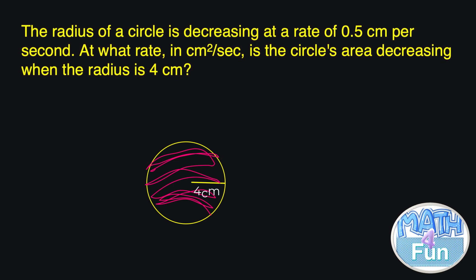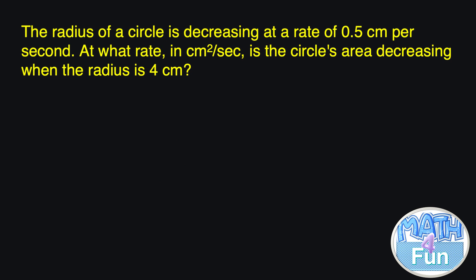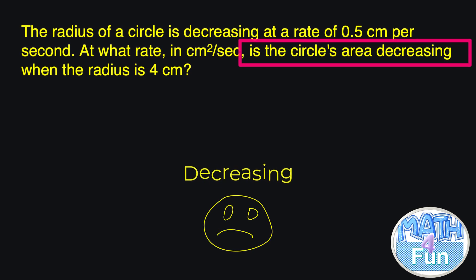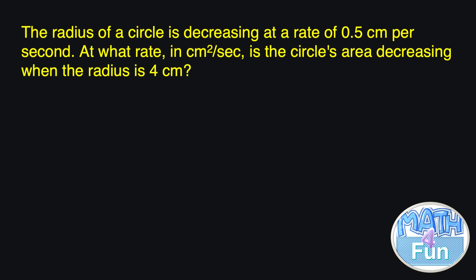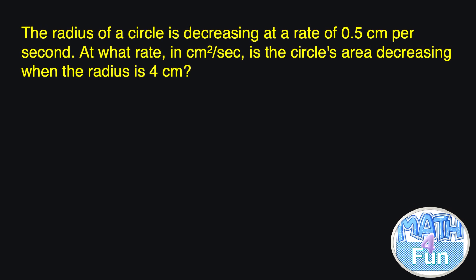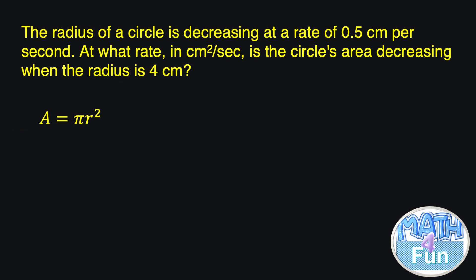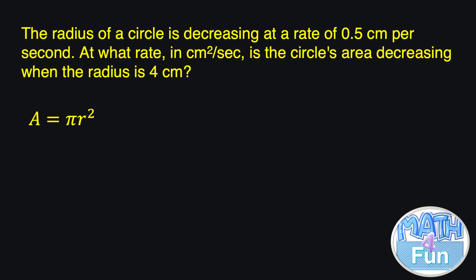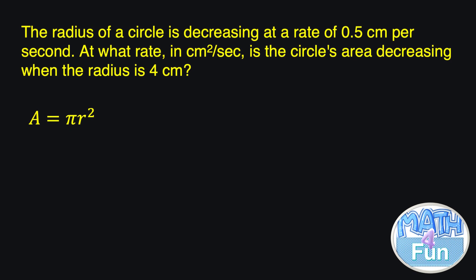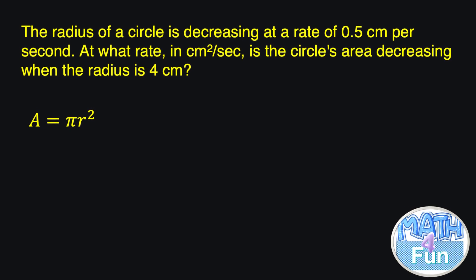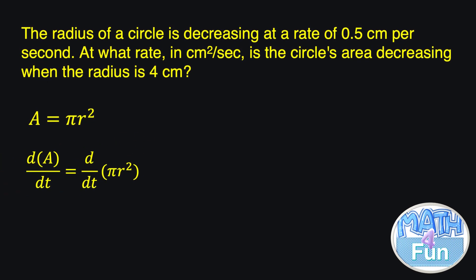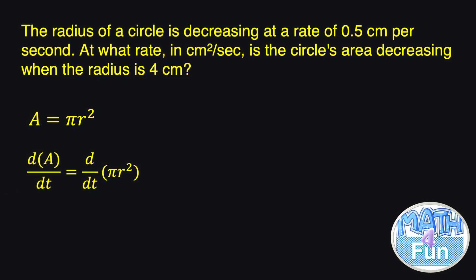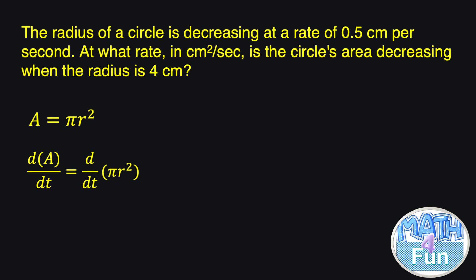At the beginning of the question, they gave us the rate of change of the radius and asked for the rate of change of the area. So we need to find a relation between the area and the radius. The area of a circle is equal to π r². Since they are asking for the rate of change of the area, we derive the equation with respect to t: d/dt of A is equal to d/dt of π r².